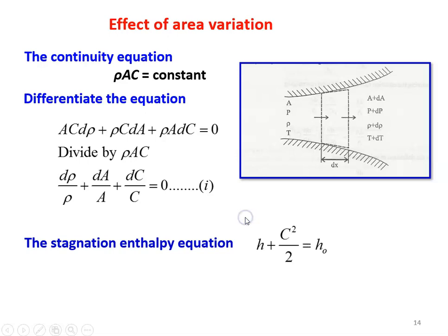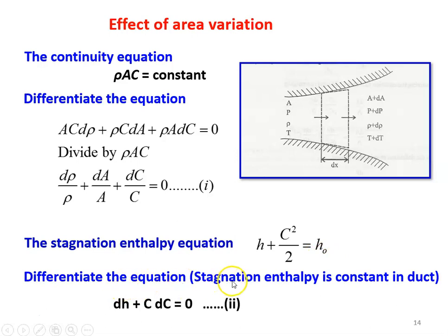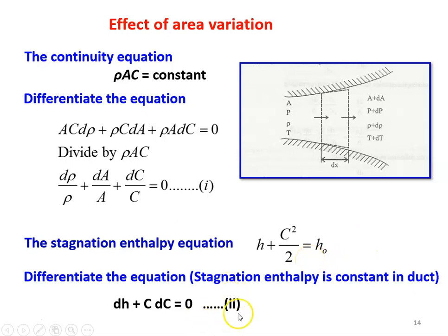Now the stagnation enthalpy equation. Stagnation enthalpy equals static enthalpy plus C-squared by two. H plus C-squared/2 equals stagnation enthalpy H₀. Differentiating this equation along the duct — stagnation enthalpy is constant for isentropic flow — we get dH plus C·dC equals zero, because H₀ is constant. This is equation number two.